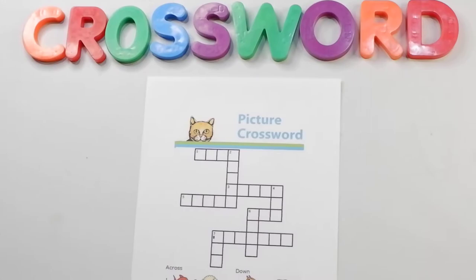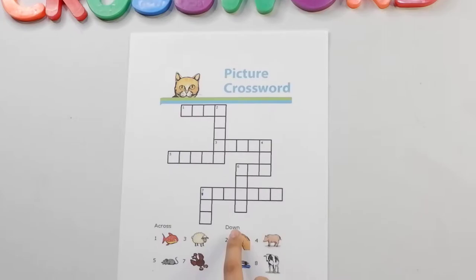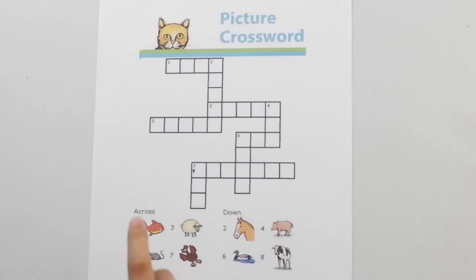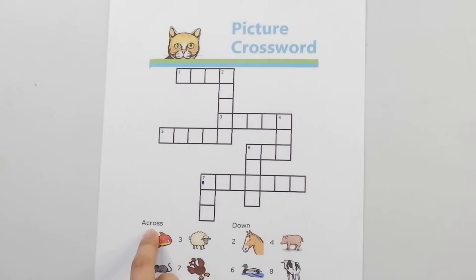Another thing we see when we solve crossword puzzles are the words across and down. This means when it is under across, the answer should be written horizontally.